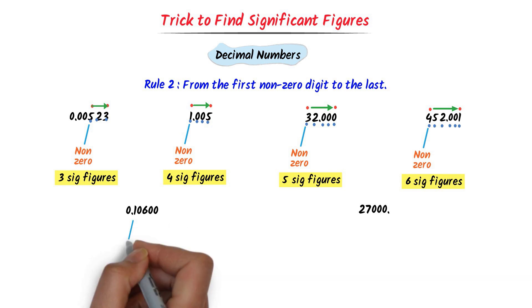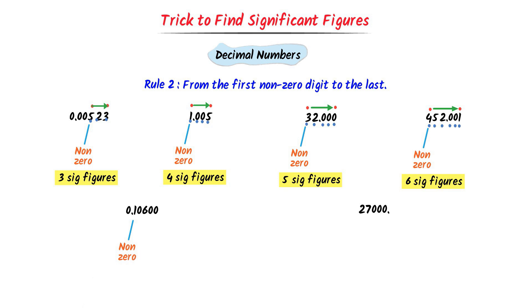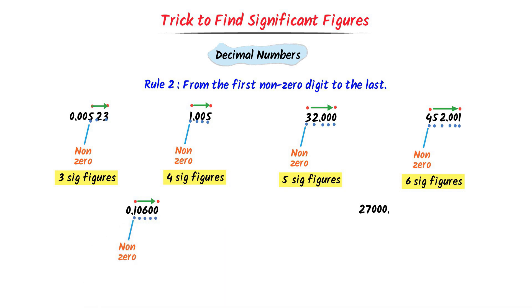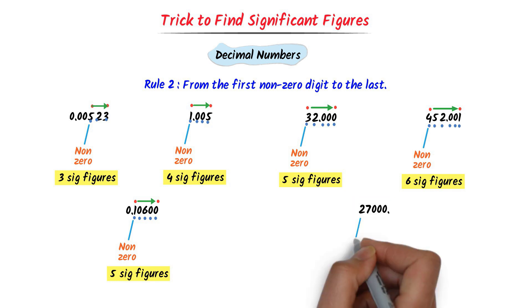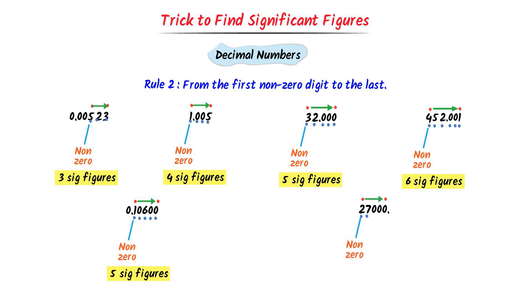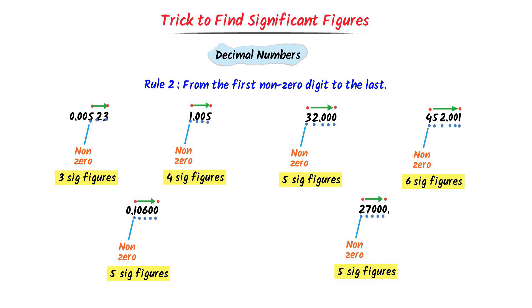In case of the fifth number, the first non-zero digit is 1. I go from 1 to the last: 1, 2, 3, 4, 5 — there are 5 significant figures. In case of the sixth number, we can see that a decimal point is present at the end. The first non-zero digit is 2. I go from 2 to the last: 1, 2, 3, 4, 5 — there are 5 significant figures. Therefore, using rule number 2, we can easily find significant figures in decimal numbers. Note down rule number 2.